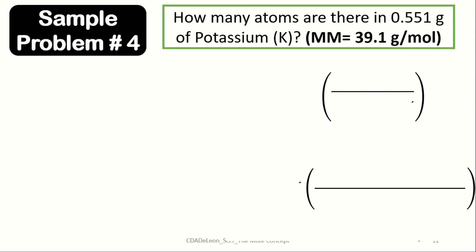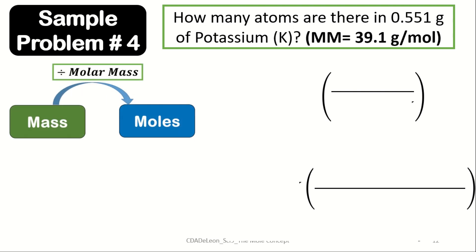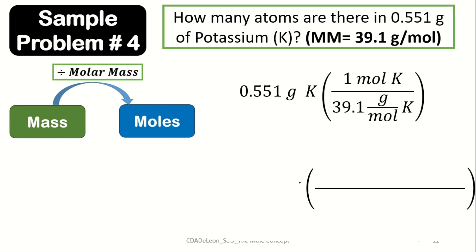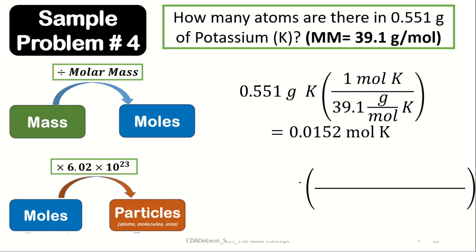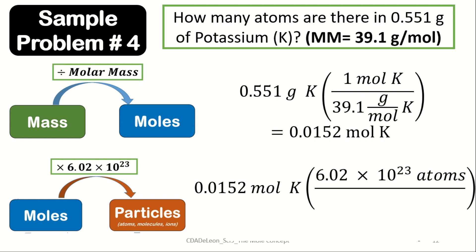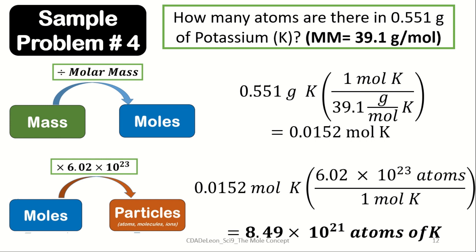Sample problem 4: How many atoms are there in 0.551 grams of potassium, given a molar mass of 39.1 g/mol? We first convert mass to moles: 0.551 g K ÷ 39.1 g/mol = 0.0152 mol K. Then we convert moles to atoms by multiplying by Avogadro's number: 0.0152 mol × (6.02 × 10²³ atoms / 1 mol). We use 'atoms' since potassium is an element. This gives us 8.49 × 10²¹ atoms of potassium.